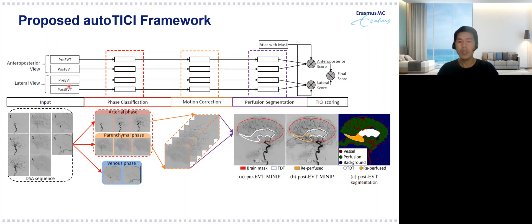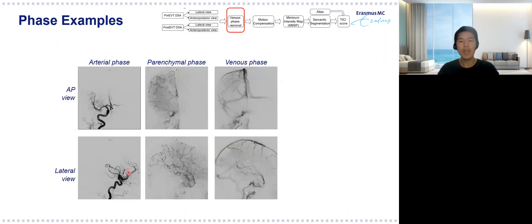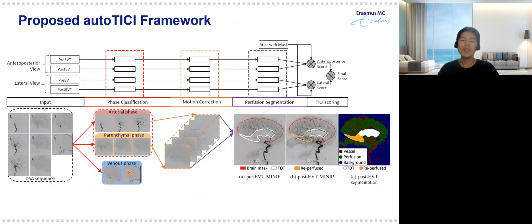First, we use a convolutional neural network to separate each acquisition into three phases: arterial, parenchymal, and venous phase. In this slide, you can see a couple of image examples of each phase in AP and lateral views. After phase classification, the venous phase frames are excluded from the next steps.